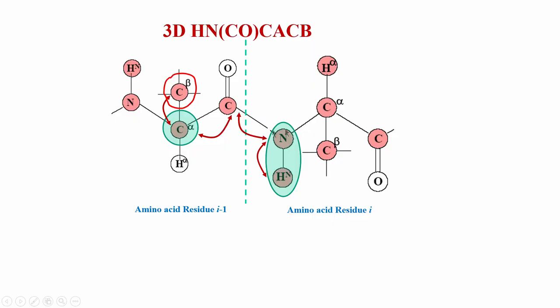In the last class, we looked at the 3D expression HNCOCACB towards the end. Let us look at that again — this will be the last 3D triple resonance experiment we will look at in this course — and see what information it gives and how it is complementary to HNCACB. As shown here, across a dipeptide of amino acids I and I-minus-1, HNCOCACB correlates the chemical shift of N and HN of one amino acid (residue I) to the CA and CB of the previous amino acid I-minus-1.